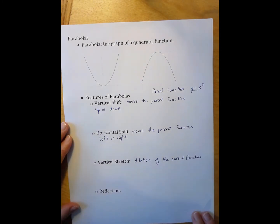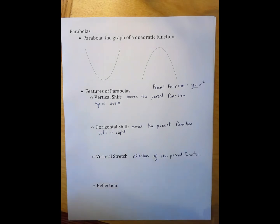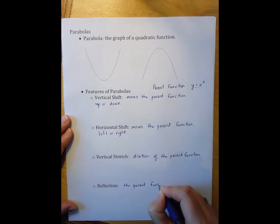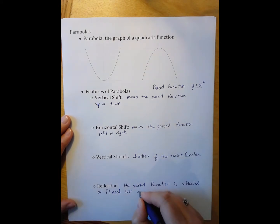The last major transformation that occurs for a parabola from the parent function is a reflection. And a reflection occurs when the parent function is reflected or flipped over a line. And in our case, that reflection always occurs over a line that is horizontal.